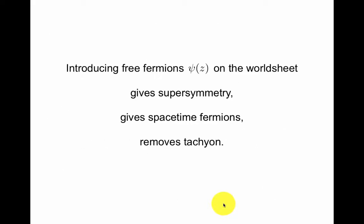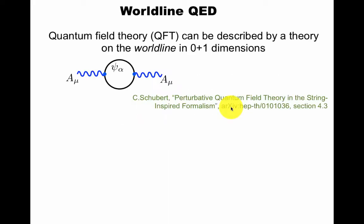It turns out that simply introducing free fermions, psi, on the worldsheet gives us supersymmetry, spacetime fermions, and removes the tachyon. I emphasize these as a motivation, so this was sort of a side effect from this point of view. Let's go through that, but it's actually simpler to start with a simpler example.